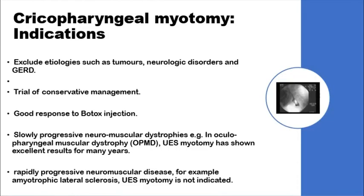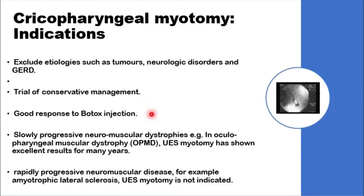The next interventional option is cricopharyngeal myotomy — either open surgery or endoscopic. The key to success is good patient selection. Other etiologies for dysphagia, including tumors or generalized neurological disorder, should be excluded before attempting surgery. A trial of conservative management before surgery is essential. A previous good response to Botox injection is a good predictor of success of the myotomy.